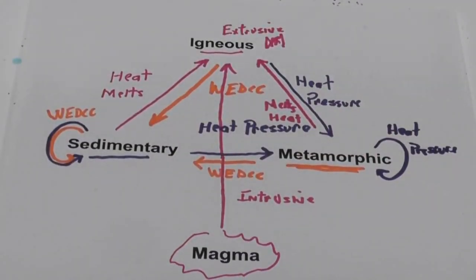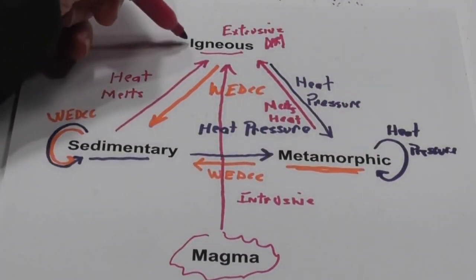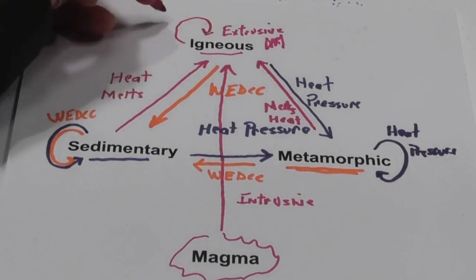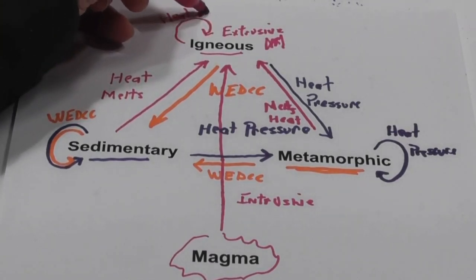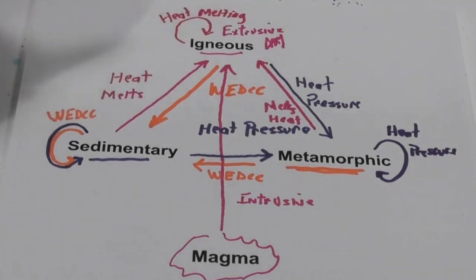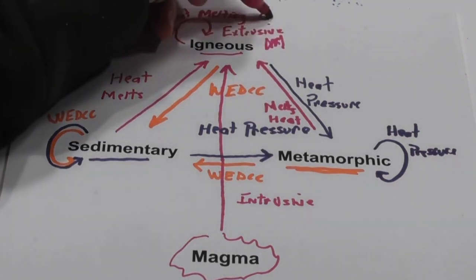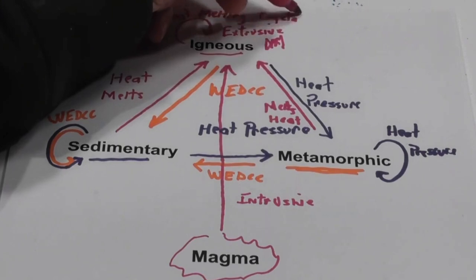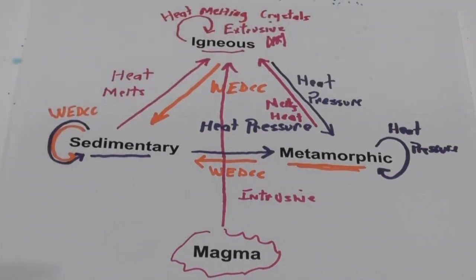And then the igneous rock can become an igneous rock with heat and melting. And many times, depending on the rate of cooling, you get crystals. Okay, and so, again, I think that pretty much covers the rock cycle.